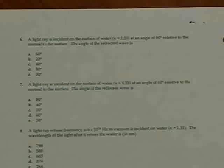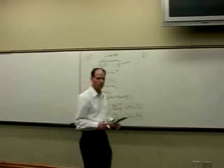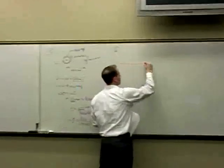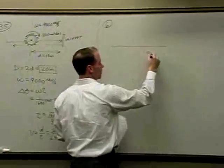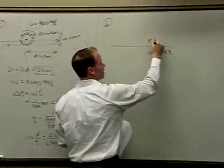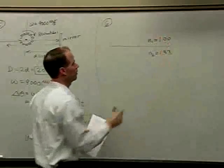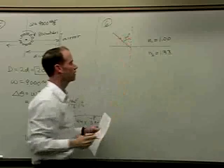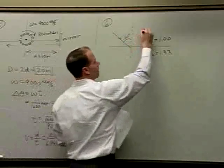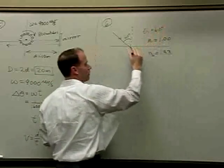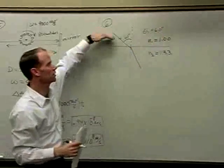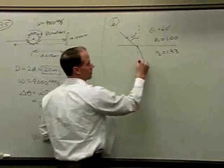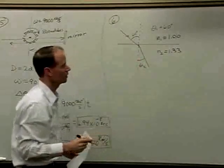Problem number 6. A light ray is incident on the surface of water, index of refraction 1.33. The index of the first medium is air, which is 1.0. The light ray comes in at an angle of 60 degrees — that's our incident angle, theta 1. Any time you go from a lower index to a higher index, it'll refract towards the normal. The angle of refraction is theta 2, and we wish to find it.